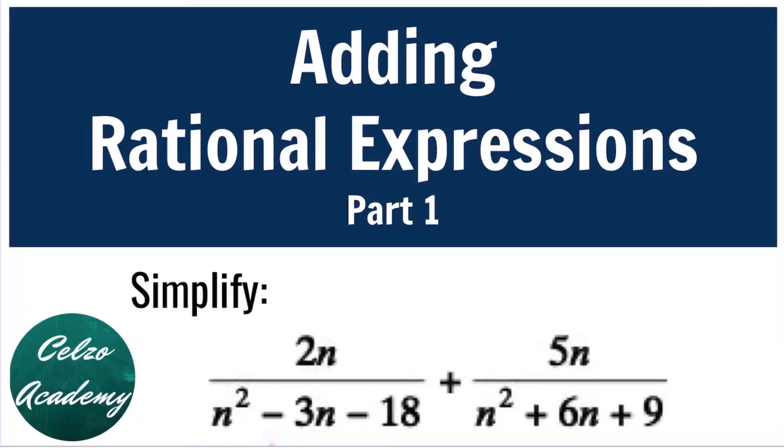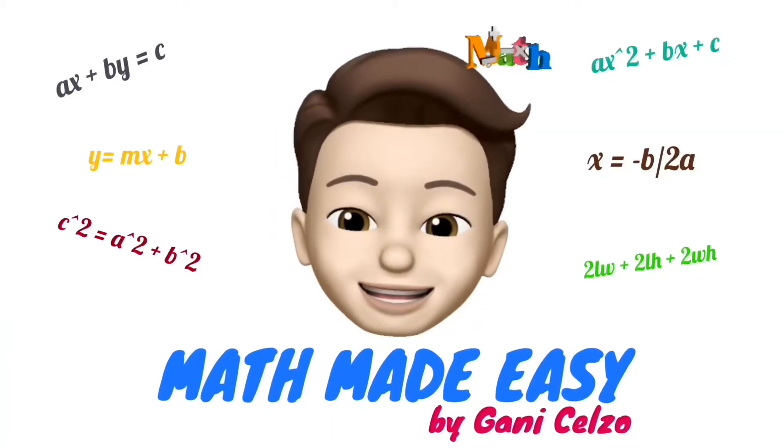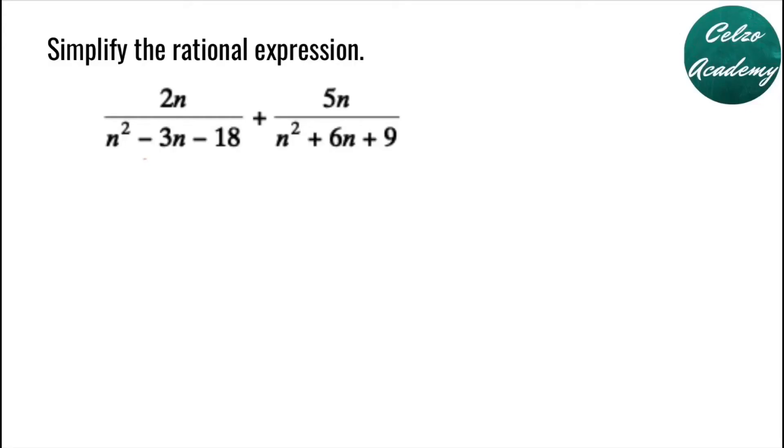Do you know how to add rational expressions? This problem was sent to us by Elsa from Bataan, Philippines. Simplify the rational expression 2n over n squared minus 3n minus 18 plus 5n over n squared plus 6n plus 9. Give it a try and play the video whenever you're ready for the solutions.